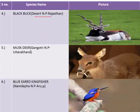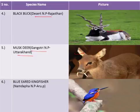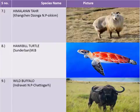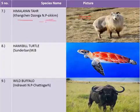The musk deer belongs to Gangotri National Park in the state of Uttarakhand. The blue-eared kingfisher has its habitat in Namdapha National Park in the state of Arunachal Pradesh. The Himalayan Thar belongs to Kangchenjunga National Park, situated in the state of Sikkim. The hawksbill turtle has its habitat in Sundarbans National Park in the state of West Bengal.